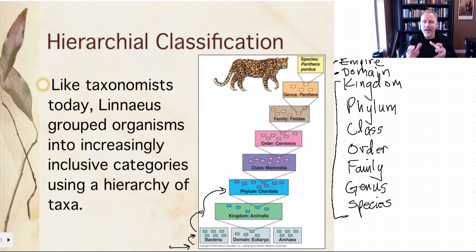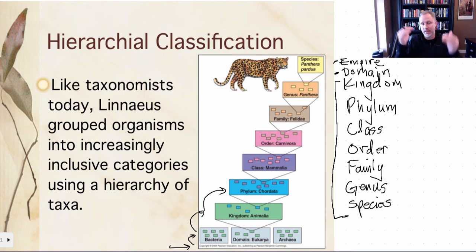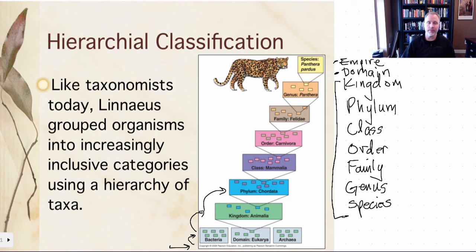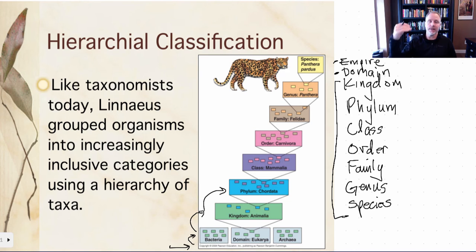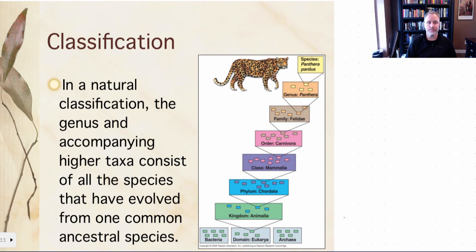Kingdom, phylum, class, order, family, genus, species has been around for a long time. A mnemonic I was taught is 'King Philip came over from Germany swimming' — there are many versions, as long as you remember kingdom, phylum, class, order, family, genus, species. The newer levels are empire — prokaryotes and eukaryotes — and then the domain: Archaea, eubacteria, and Eukarya. Then you go through the kingdoms from there.